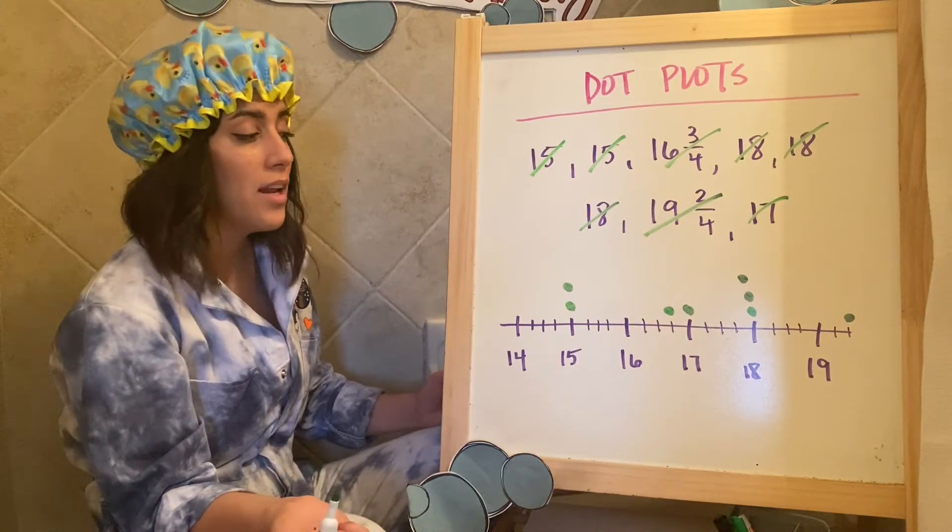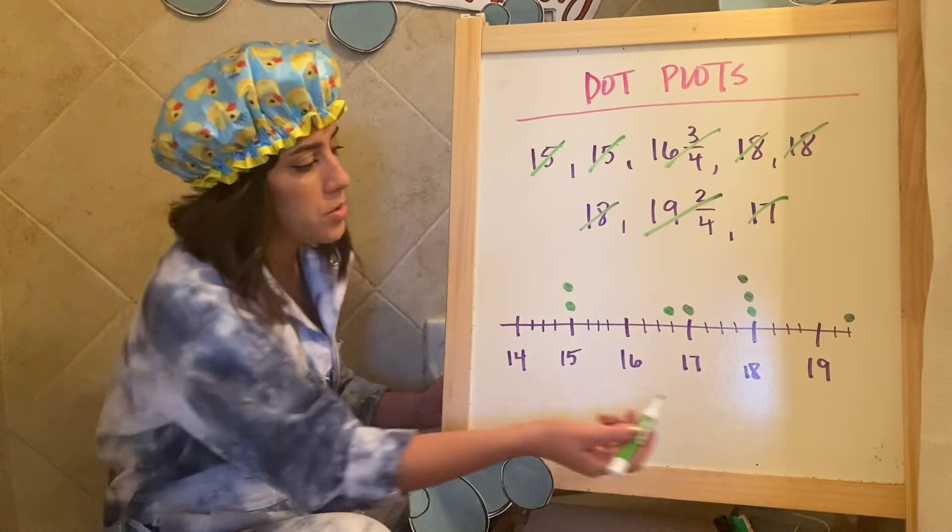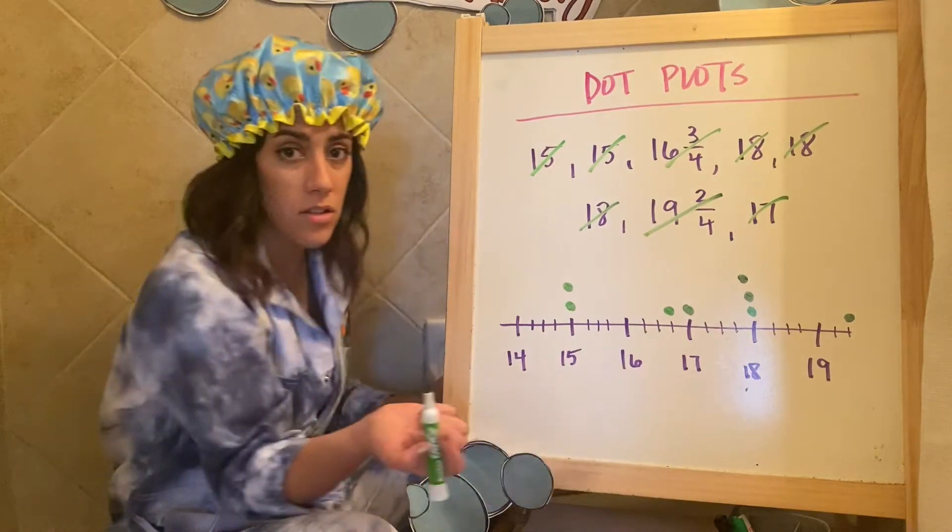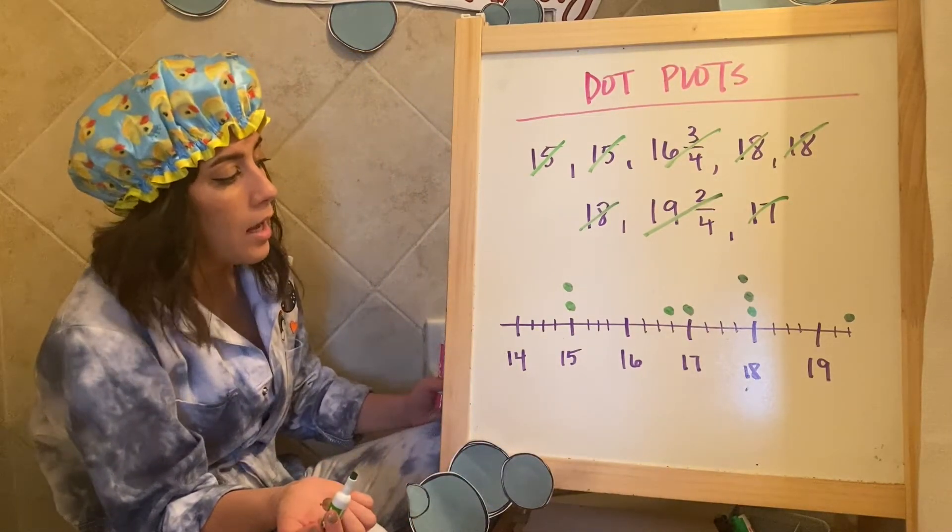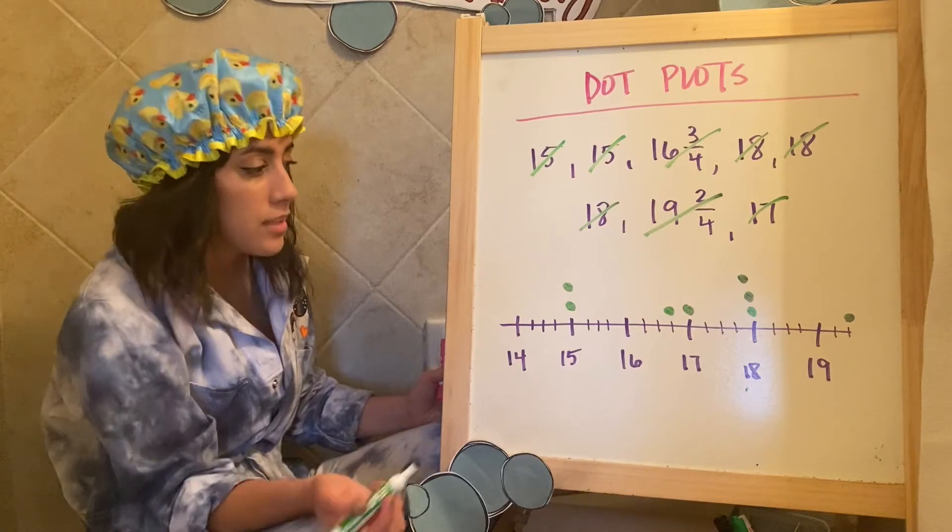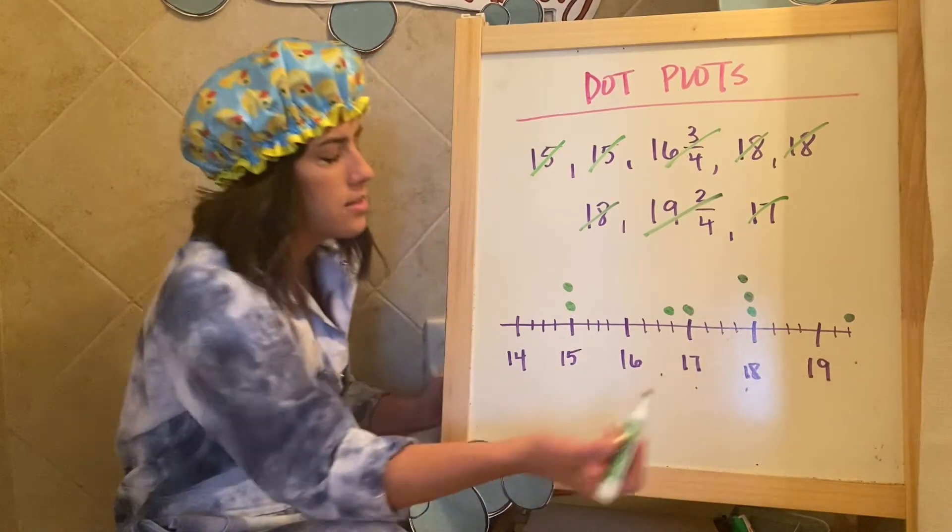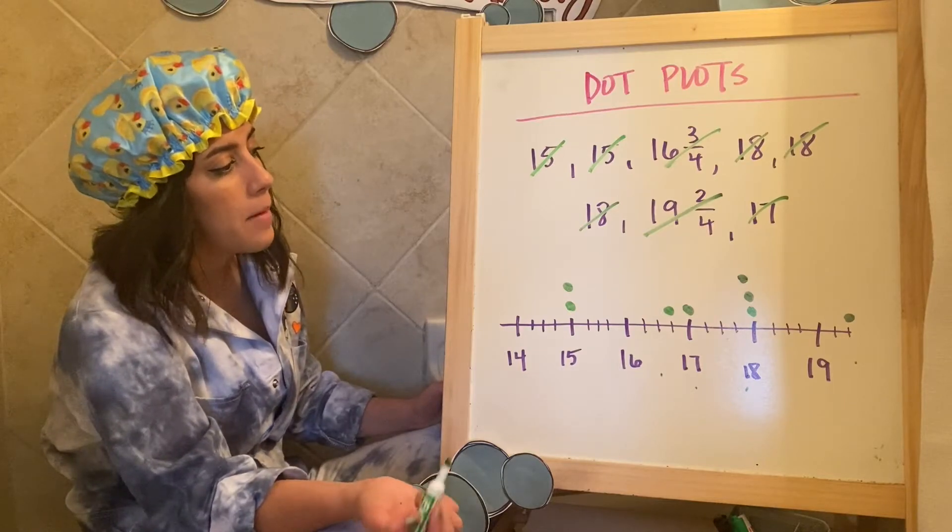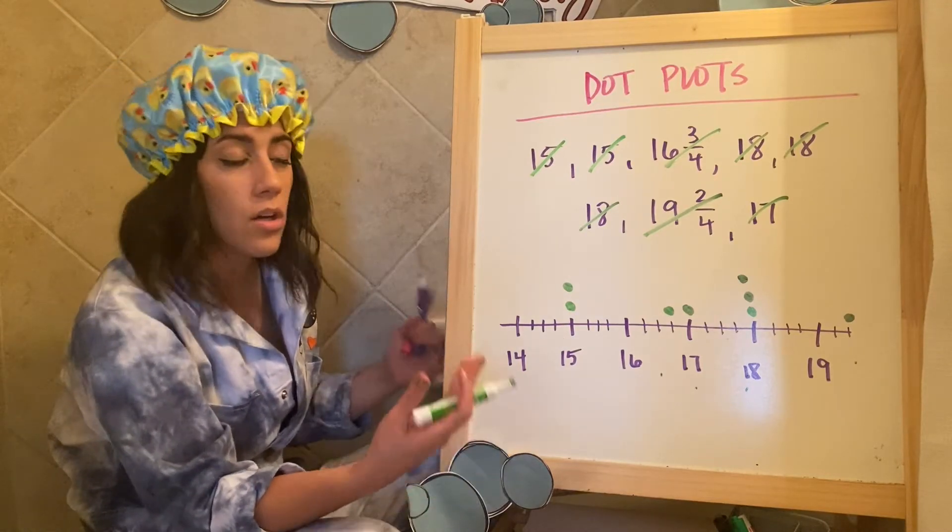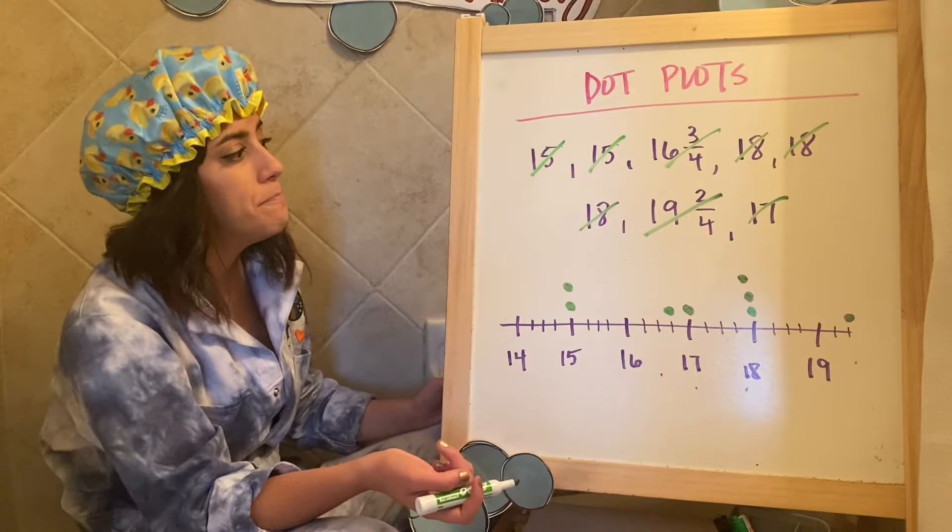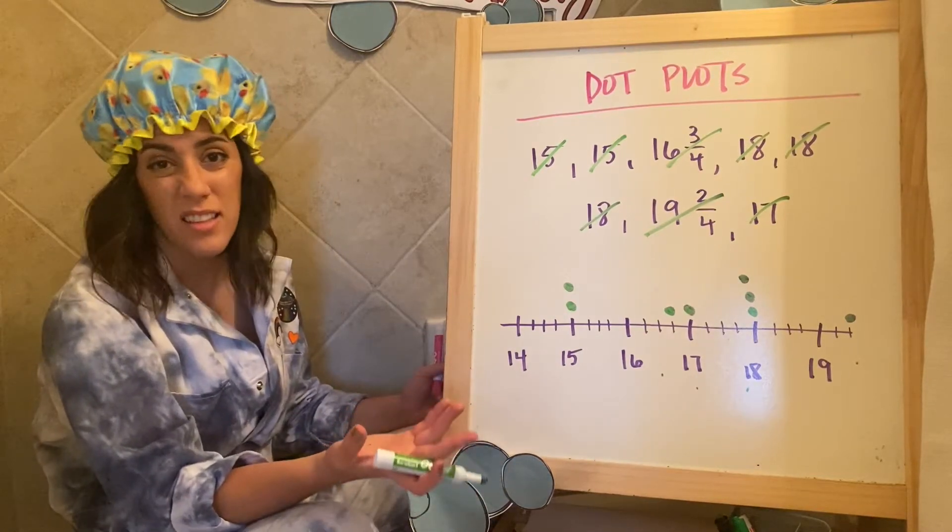Based on the data that they gave me, I'm able to cross all of these out because I already placed them on here. I can see which one has the most, which would be 18. I could answer that question if they were to ask me. Which three have the least I could say the 16 and three fourths, the 17 and the 19 and two fourths. How many do I have all together? You could also answer that.